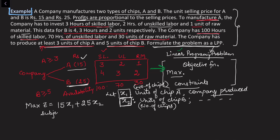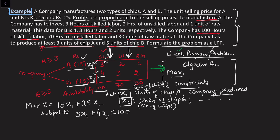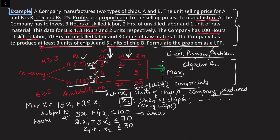Subject to the constraints: for skilled labor, one chip A takes three hours so x1 chips take 3x1 hours, and chip B takes four hours per unit so it is 4x2. The total availability is 100, giving the constraint: 3x1 + 4x2 ≤ 100. For unskilled labor: one unit takes two hours so it is 2x1, plus three hours per unit of chip B, giving 2x1 + 3x2 ≤ 70.